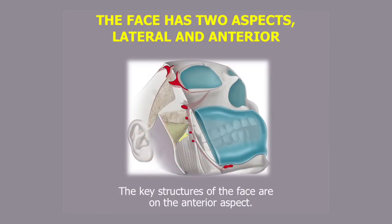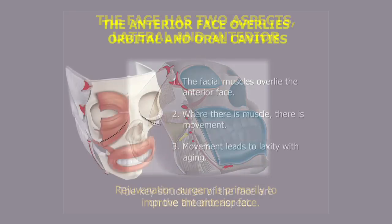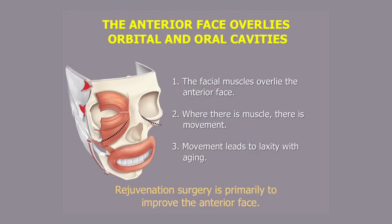The face proper is the anterior face — this is the part we see front on. It contains the three major cavities and the dynamic soft tissue covers that contain the muscles of facial expression. What separates the two parts of the face is the vertical angulation of the facial skeleton, and attached to that, the vertical line of retaining ligaments, as shown in red on the slide. It is the anterior face where the primary movement occurs, predisposing it to the development of aging laxity. Accordingly, our rejuvenation surgery is primarily to improve aging changes of the anterior face.